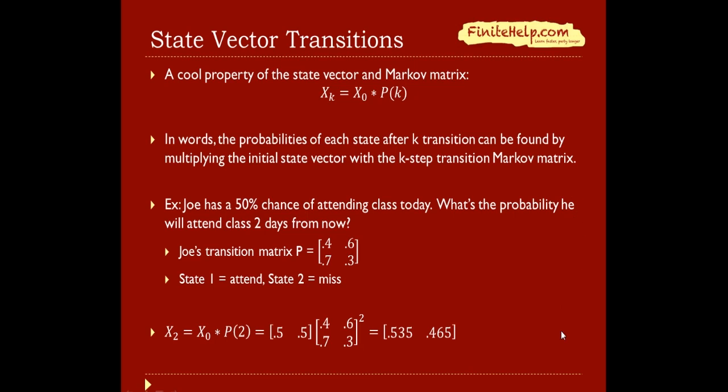Let's do an example to demonstrate this. Joe has a 50% chance of attending class today. What's the probability that he will attend class two days from now, given the same transition matrix? Here is his transition matrix, the same one back from 8.1. State 1 is attend, state 2 is miss. We're trying to find the probability that he will attend class two days from now.